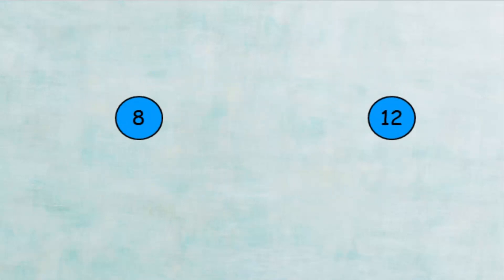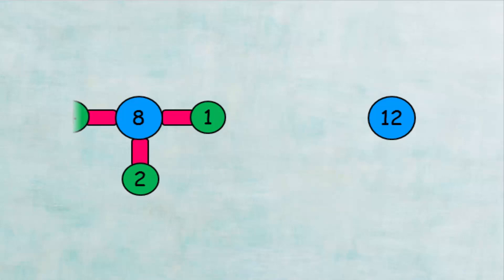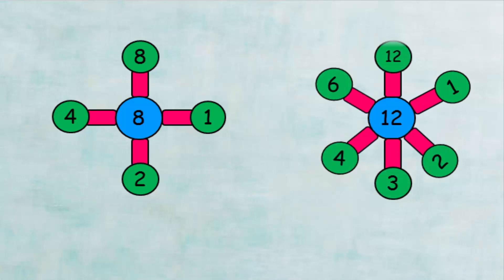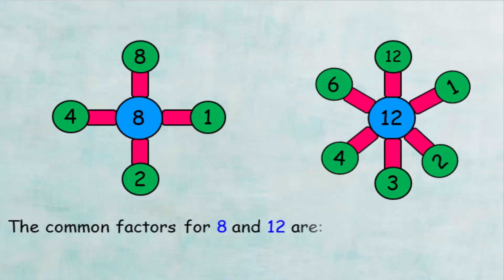What about number 8 and 12? At the beginning, we'll find the factors of number 8 are 1, 2, 4, and 8. And the factors of number 12 are 1, 2, 3, 4, 6, and 12. The common factors between the two numbers are 1, 2, and 4. These numbers are called the common factors of the two numbers 8 and 12.